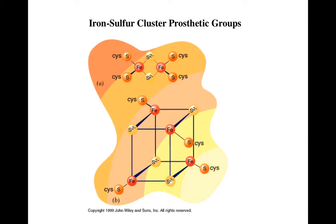Another prosthetic group widely used in the electron transport chain is simpler: iron-sulfur clusters. You can have Fe₂S₄ or Fe₄S₈ clusters—it's really just a matter of size and complexity. Without all the complexity of the pyrroles and heme, iron can be directly attached to cysteine via its sulfur. This simpler prosthetic group allows multiple iron molecules to be alternatively oxidized and reduced, making it a wonderful system for electron movement.